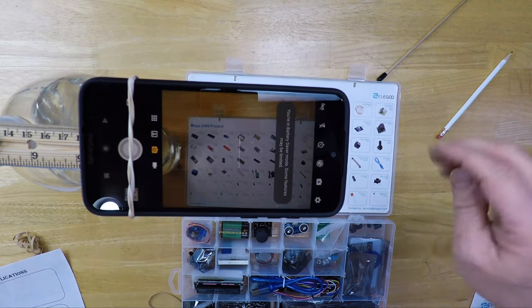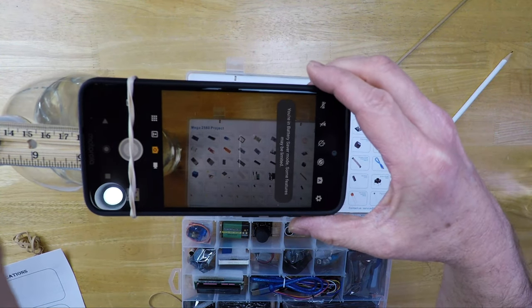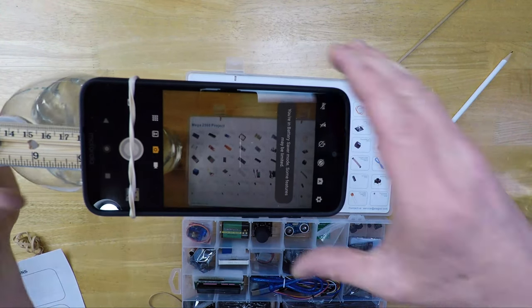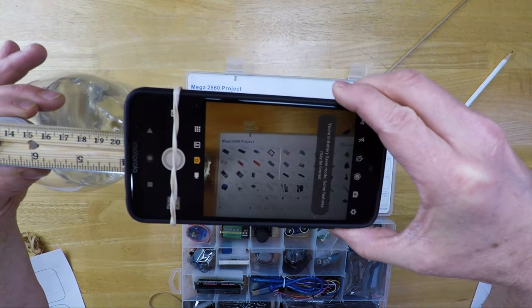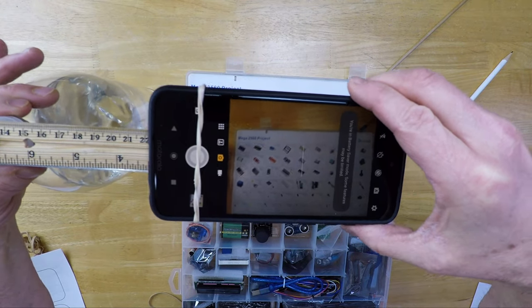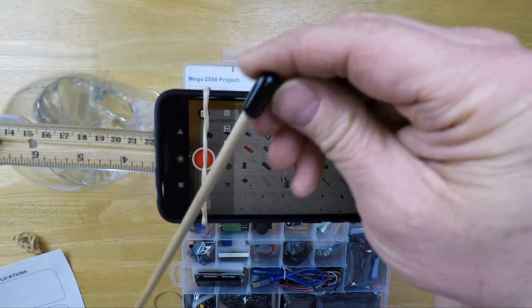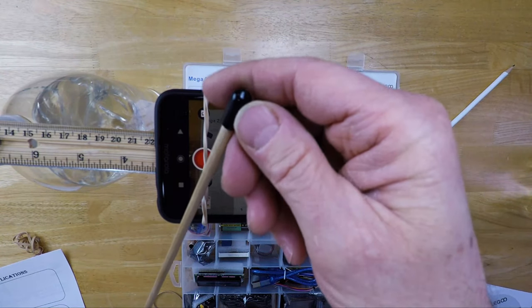This will get you a sense of what you can get with the camera. Now you've got the bottle over here and you want to avoid that, so all you do is slide the phone until the bottle goes away.